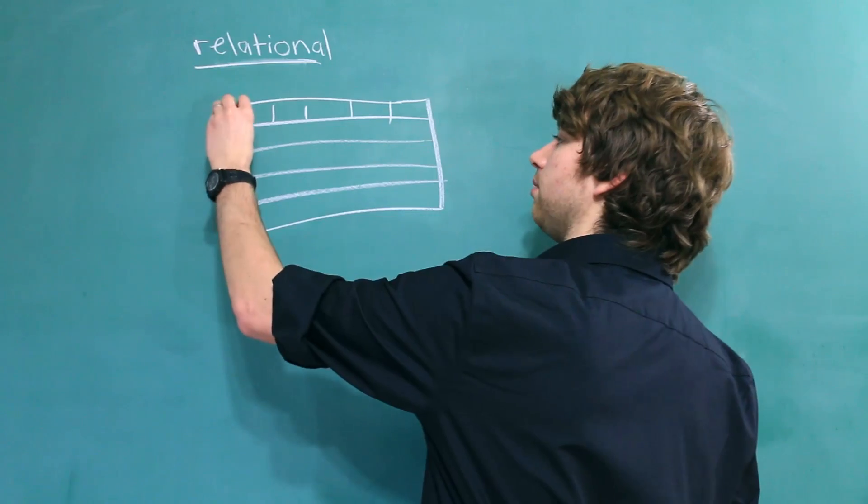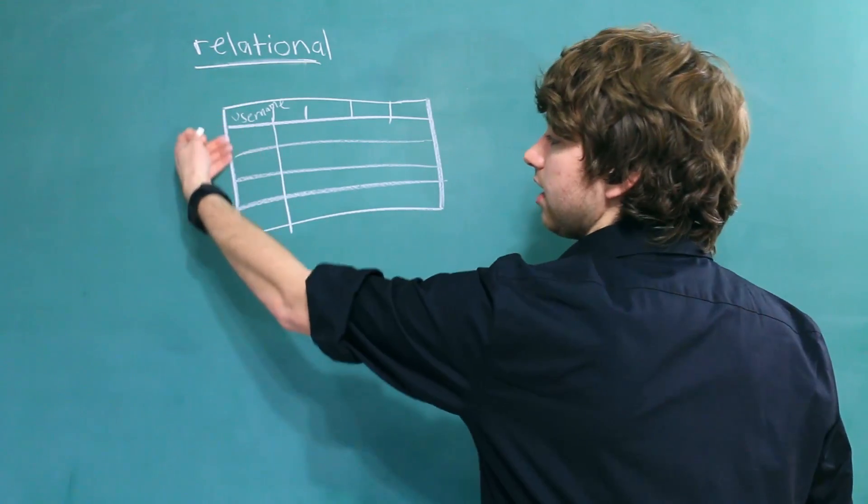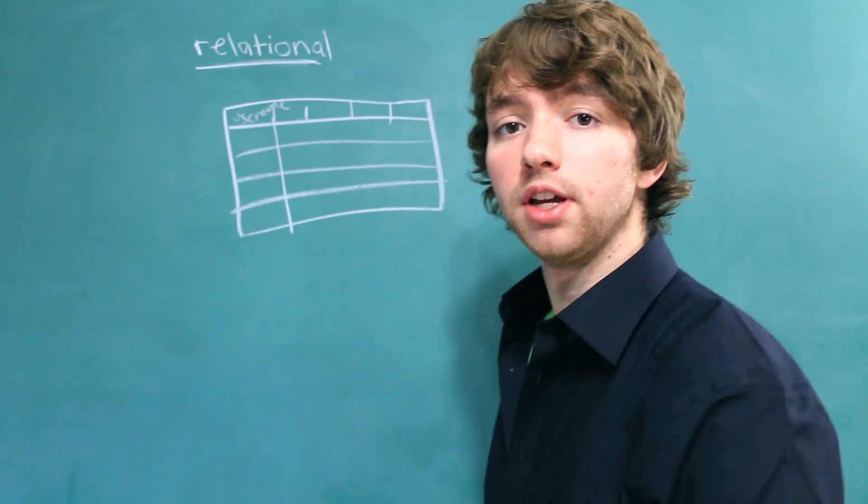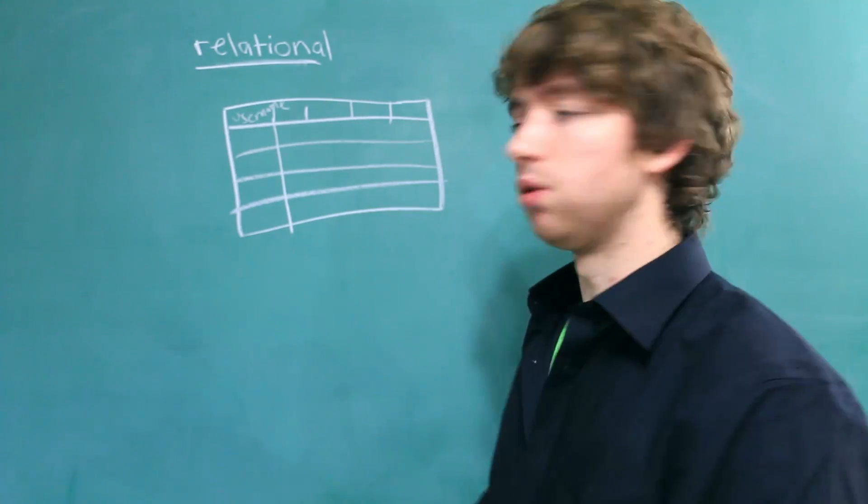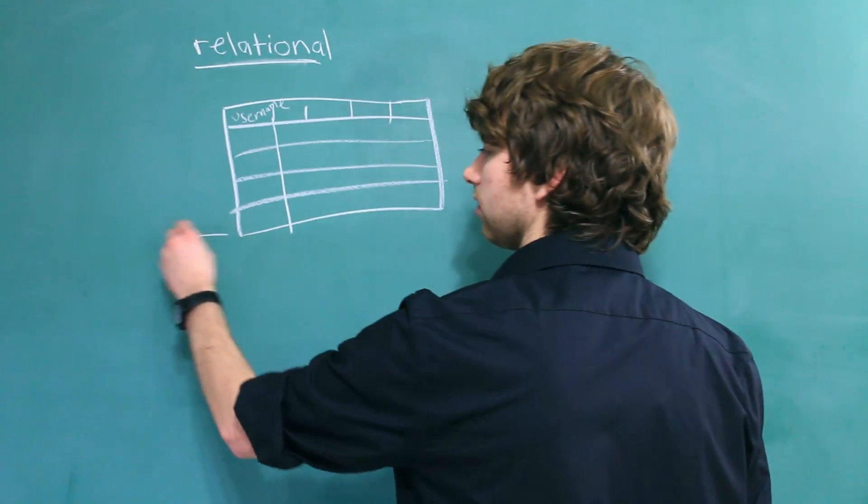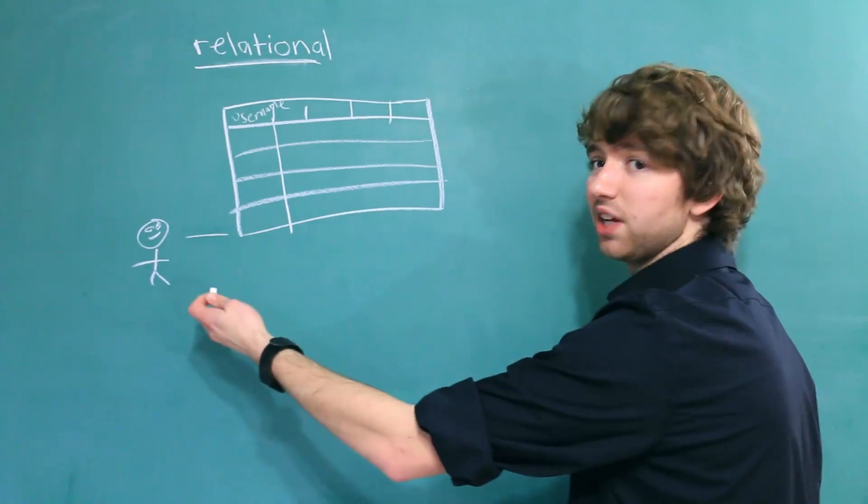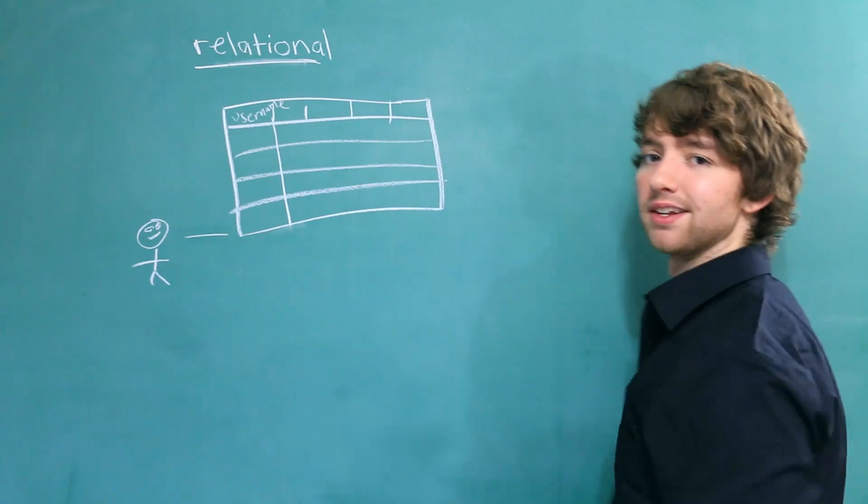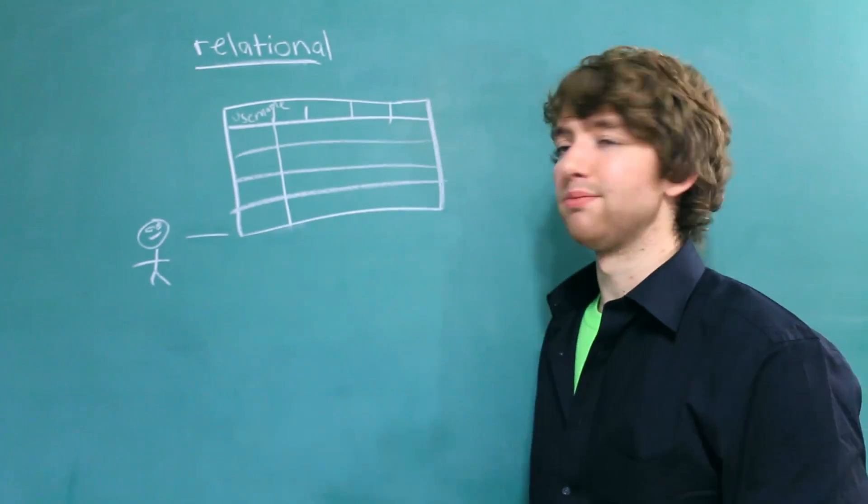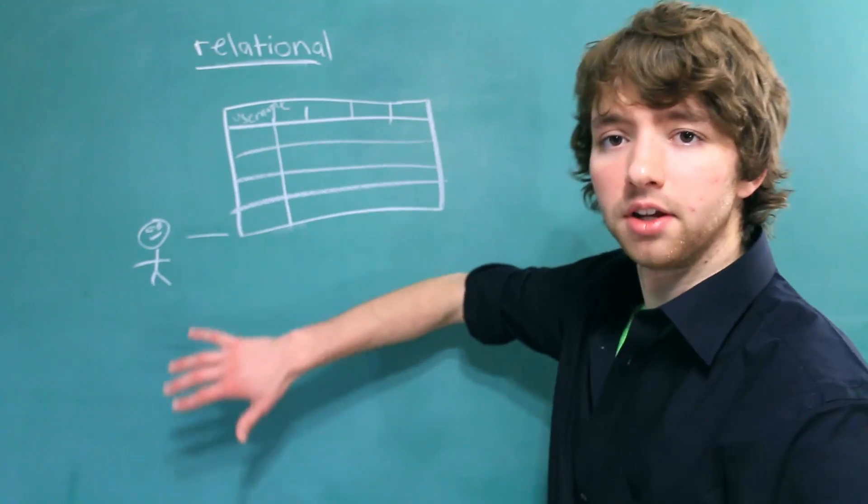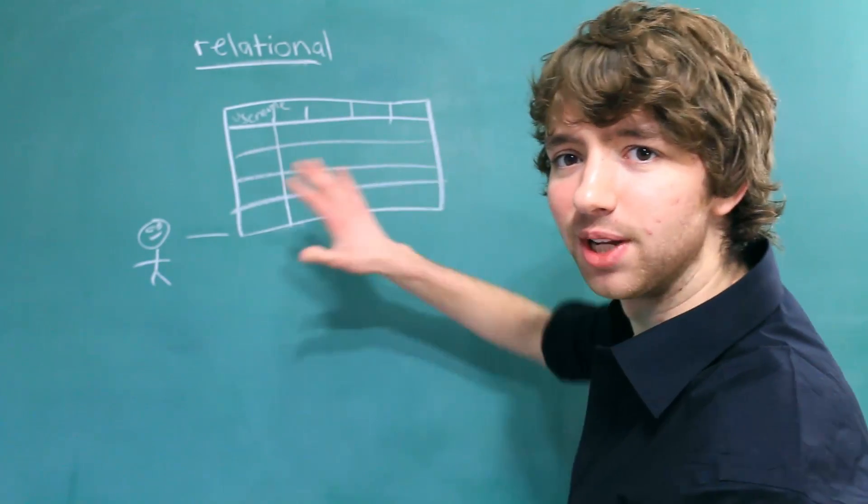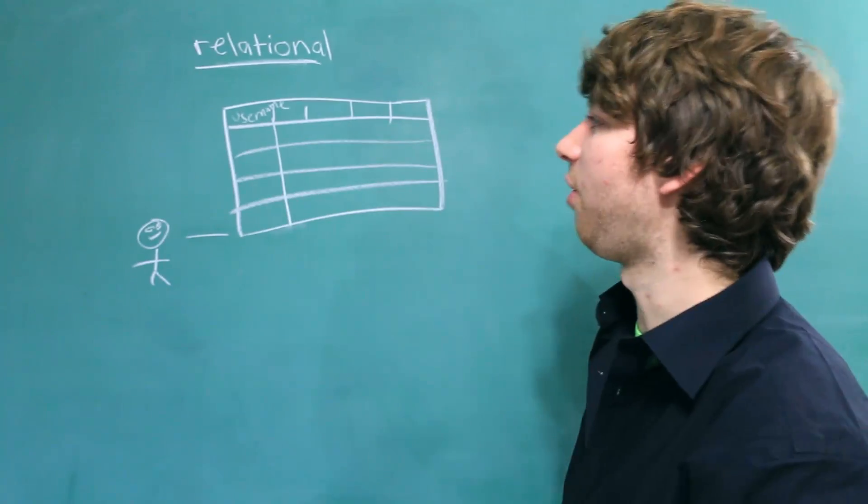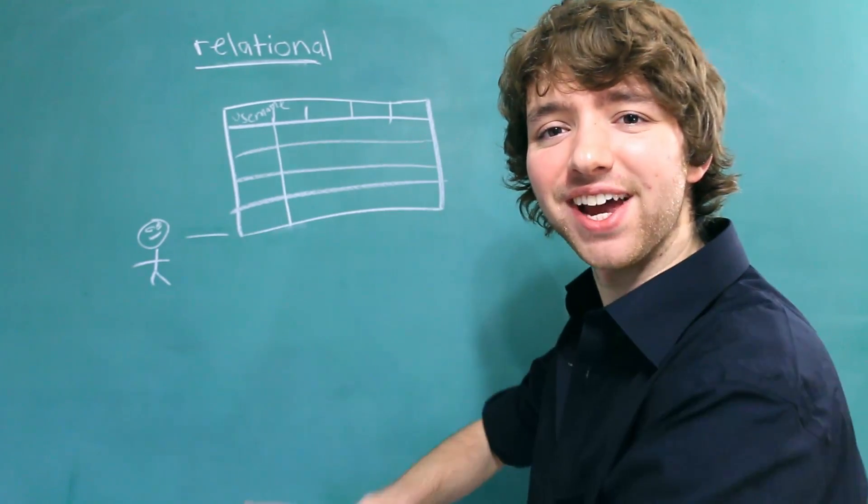So for example, we can have a column of a username, and then all of the data in this column is going to be everybody's username. But the way this data is entered into this table is by row. So a specific user, let's say this guy, signs up for an account. He puts in a username. He might put in an email, a phone number, a first name, last name. Whatever it is, it doesn't really matter. All of this is stored tabularly. All of this is stored inside of a table.